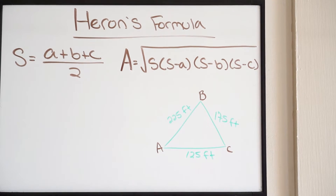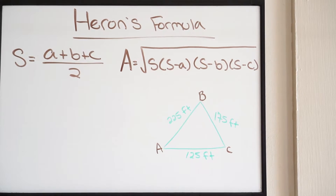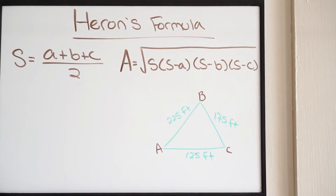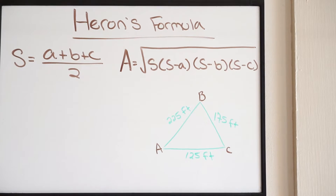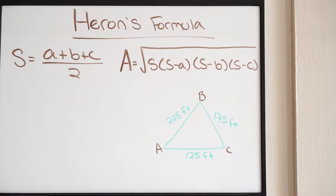In this video we're going to be talking about Heron's formula. With Heron's formula you're able to calculate the area of a triangle if you are given three sides of that triangle. So if you have the three known sides of that triangle, you can use Heron's formula to calculate the area.